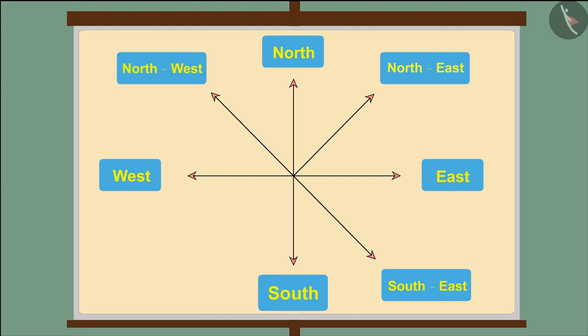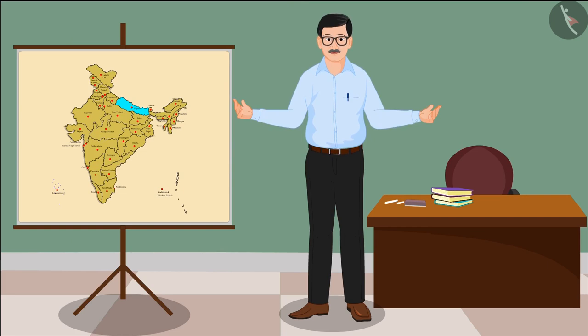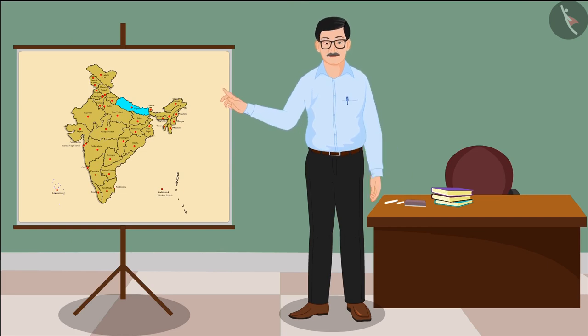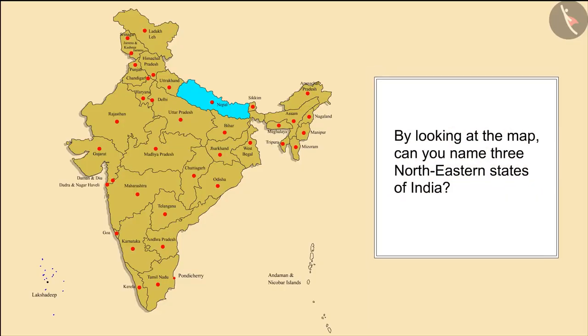The direction between south and west is called south west. Before we go, here is a question: by looking at the map, can you name three northeastern states of India? Bye friends!